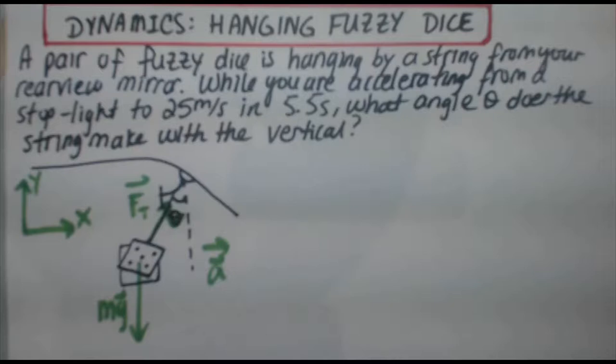A pair of fuzzy dice is hanging by a string from your rearview mirror. While you are accelerating from a stoplight to 25 meters per second in 5.5 seconds, what angle theta does the string make with the vertical?